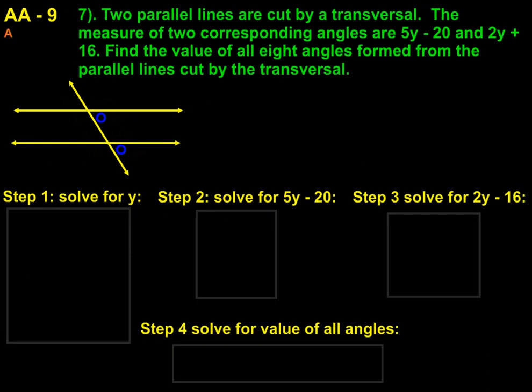And lastly, we'll take a look at question number 7. Two parallel lines are cut by a transversal. The measure of the two corresponding angles are 5y minus 20 and 2y plus 16. Find the value of all eight angles formed by the parallel lines cut by the transversal. And so we have two corresponding angles. I've marked them out with the blue circles. First thing we need to do is solve for y.